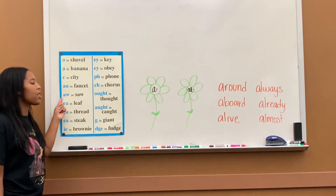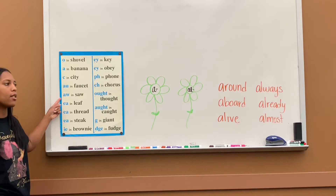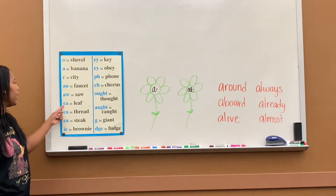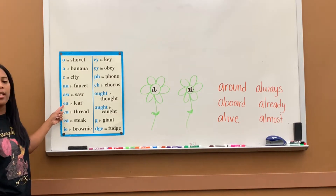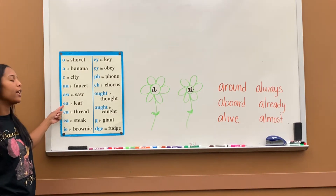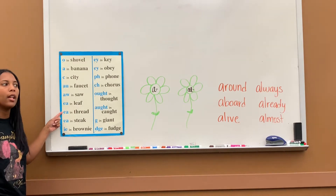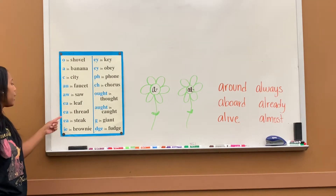W says uh in soft. EA says e in leaf. EA says e in thread.